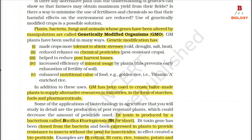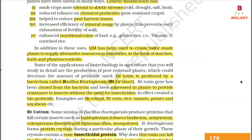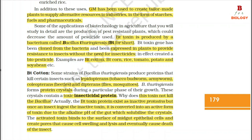In addition, GM has been used to create tailor-made plants to supply alternative resources to industries in the form of starches, fuels and pharmaceuticals. Some of the applications of biotechnology in agriculture include the production of pest-resistant plants which could decrease the amount of pesticide used. Bt toxin is produced by a bacterium called Bacillus thuringiensis (Bt for short). The Bt toxin gene has been used to confer resistance to insects without the need for insecticides, in effect creating a biopesticide.